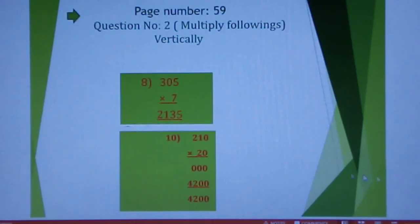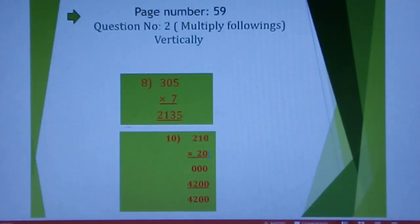Now question number 10: 210 multiply 20. At first, 210 multiply with 0. We know if any number multiply with 0, then result will be 0. So, we can write 0 zeros are 0, 1 zero are 0, 2 zeros are 0.